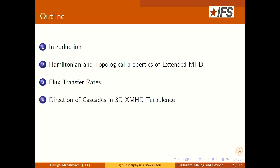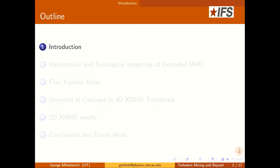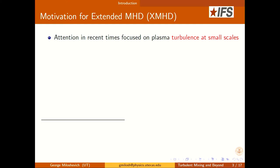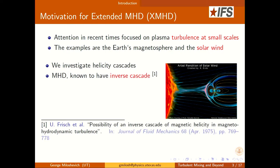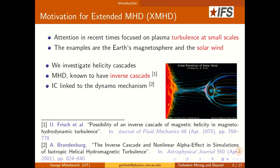Recently, attention has been focused towards turbulence at small scales, at least in the context of astrophysical turbulence, with examples from the magnetosphere and the solar wind. We are investigating the helicity cascades. It has been known in MHD for a very long time that there is an inverse cascade of magnetic helicity, which is often linked with the dynamo mechanism.